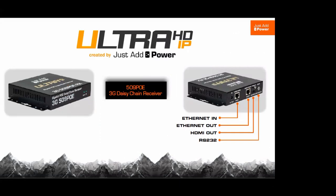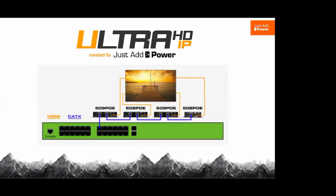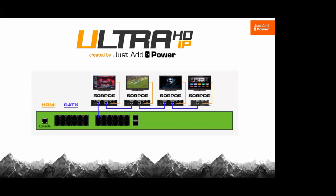One I want to touch on is the 509 PoE — it has a network output as well, so we pass that network through. We can take internet services to a display and it passes PoE through as well. An example: come out of a single network port on the switch, pass that network through to all the other receivers in the chain, and the PoE passes as well — so we've got four units off the PoE off one single network port. You can see a two-by-two video wall directly off of one network port. In multicast switching mode you could show multiple sources off that single port.